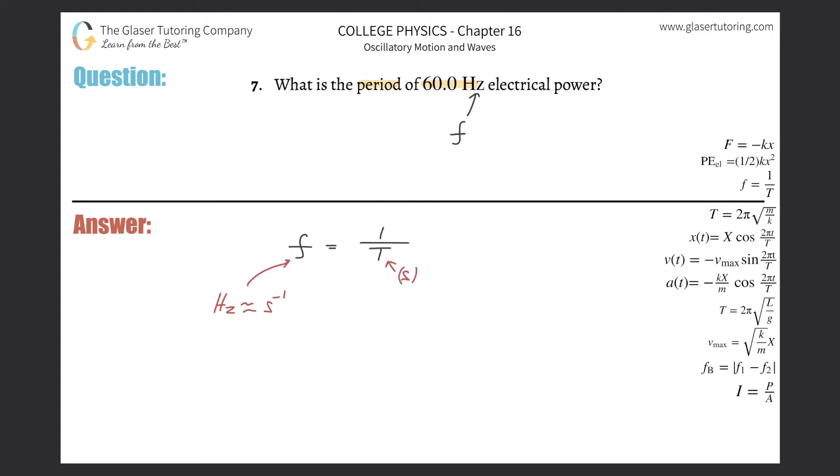So basically, just manipulating that equation, we can see that the period is just the reciprocal of the frequency. So the period here is going to be equal to one over that frequency of 60. And then this is going to be one sixtieth, and you can also plug that in to get a decimal.